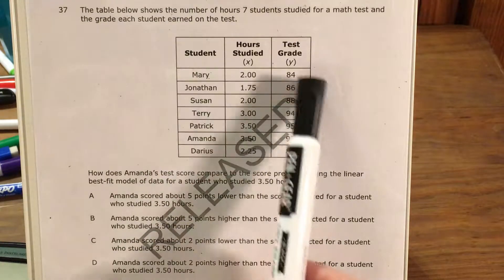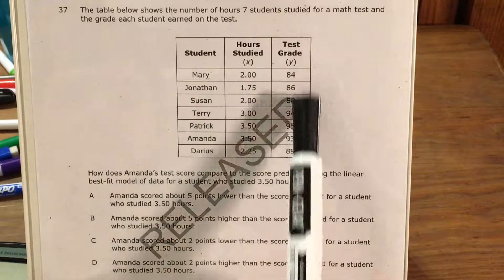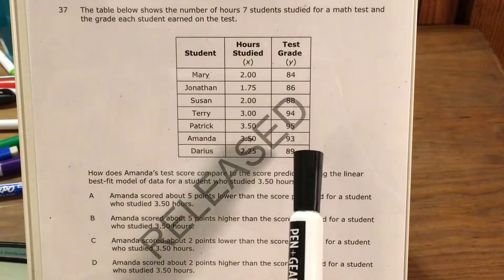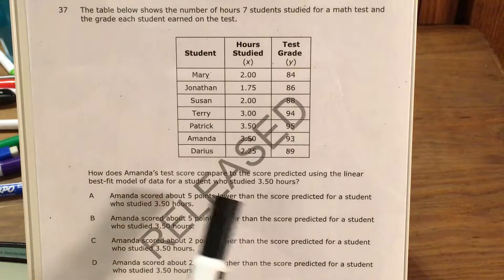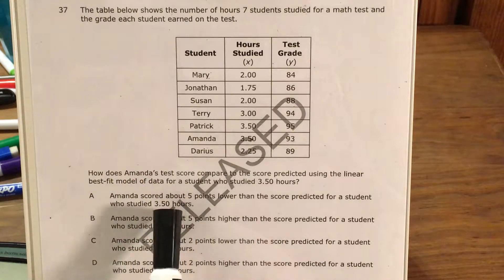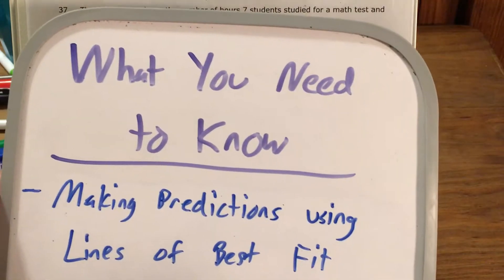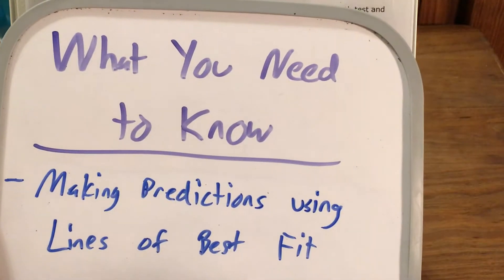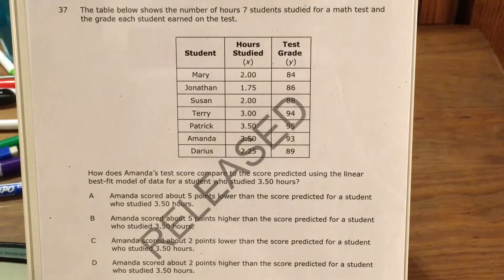The question gives us a table with different students, the hours they studied and the grade they got on their test, and we're going to use this data to find a line of best fit and compare Amanda's score to the predicted score for a student who studied for three and a half hours. The big skill this question is testing is if you can make a prediction using a line of best fit.